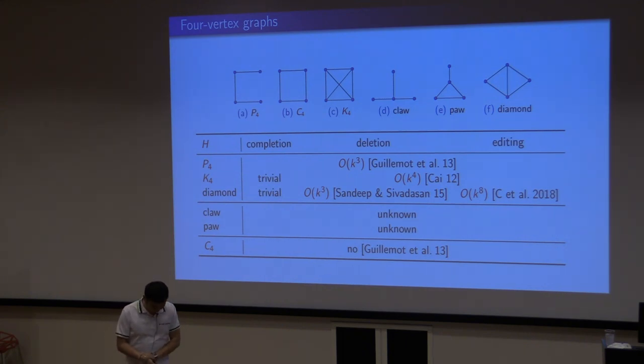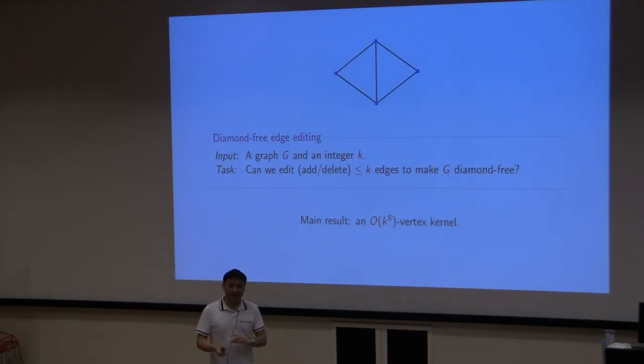Here are all the graphs on 4 vertices. Of course, some of them are not here. But if someone is not here, his complement is here. For all problems, H-free completion is basically H-bar-free deletion. And for editing, H-free and H-bar-free are the same. For P4, we know they have a cubic kernel. For K4, by hitting set, we already have a polynomial kernel. A smaller size, k to the power of 4, was given by Yufei Cai. For Diamond, Sandeep has given a cubic vertex kernel for the edge deletion problem. This talk is about the editing. We know the two open problems that have been asked many times, especially the claw-free. We know none of them. For C4, the answer is no. So Diamond is K4 minus E, only one edge is missing.